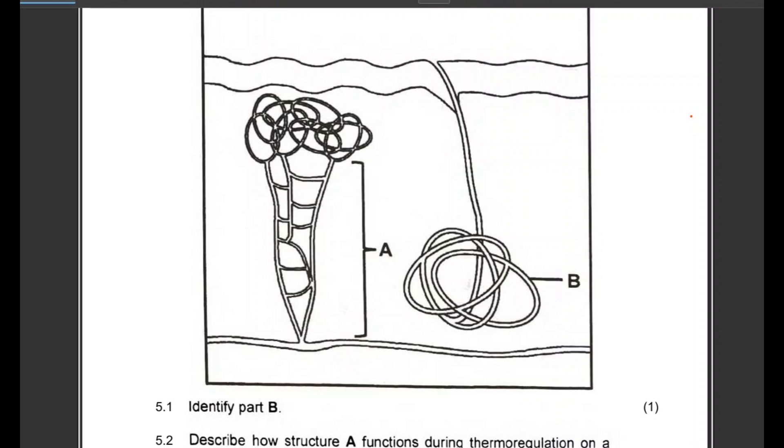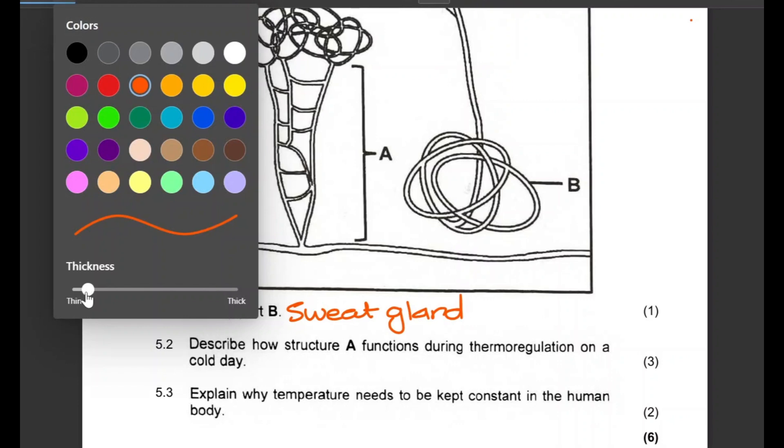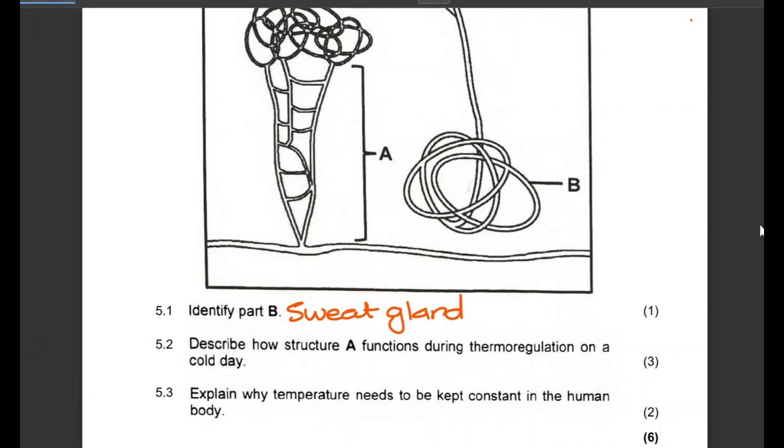You are given the human skin with two structures that are labeled as A and B. Identify part B. That is easy, that is the sweat gland.